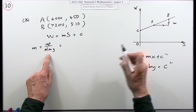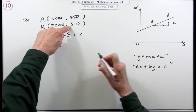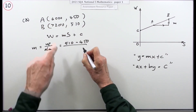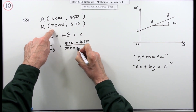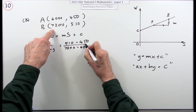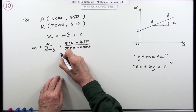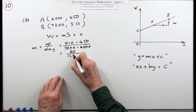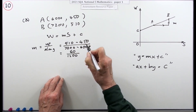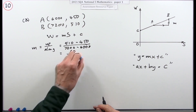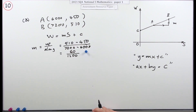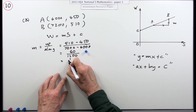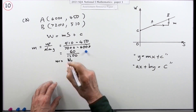Taking the further-away point: that's 510 minus 450 over 7,200 minus 6,000. That becomes 60 over 1,200. You have to cancel this down — that's one twentieth. So the gradient is one twentieth.